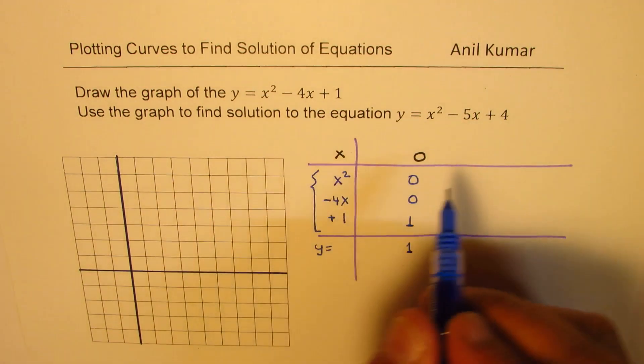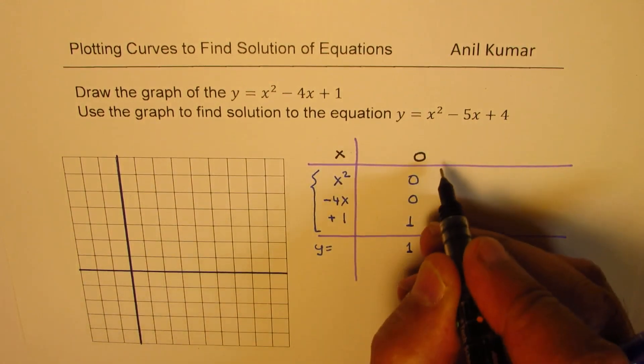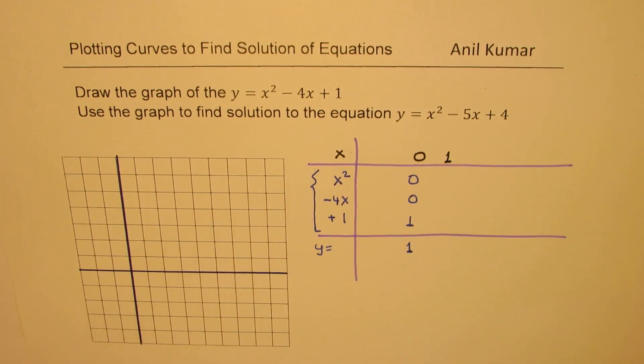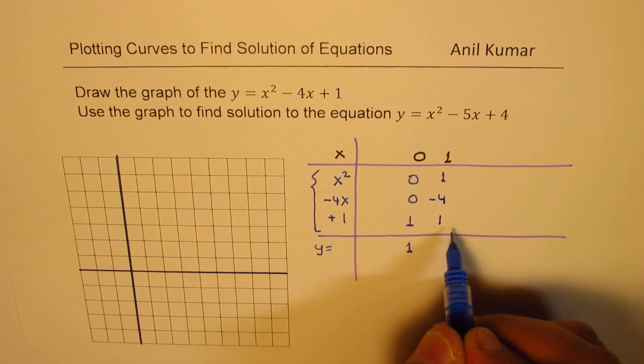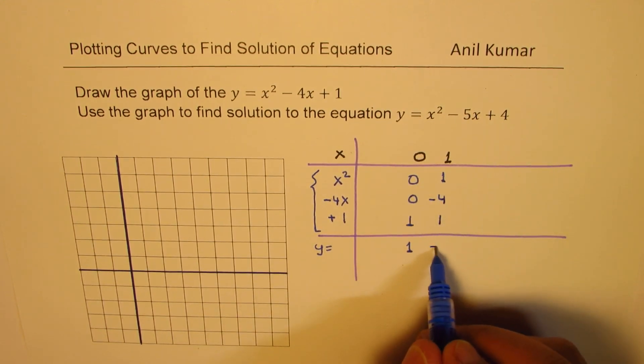Now if I take x equals 1, then square of 1 is going to be 1. This will be minus 4 and this is 1 always. So when you add this up you get minus 2.